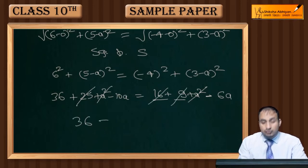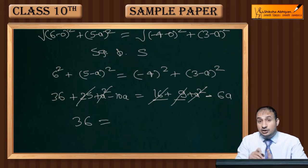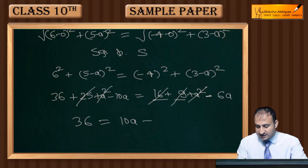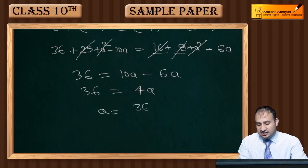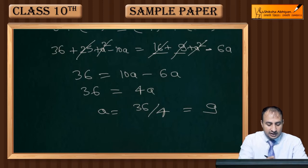So you get 36 = -10a + 6a, which gives 36 = -4a. Moving to the right side gives 10a - 6a = 4a. Therefore 4a = 36, so a = 36/4 = 9.